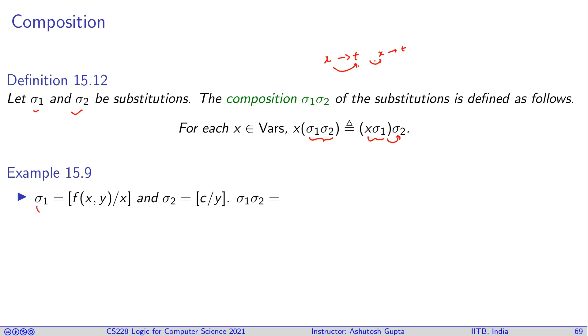Here is an example. If you have a sigma one which replaces x by this term, and sigma two which replaces y by this term, if I compose them, what will happen? If you take x, it will get to f(x,y), and then y gets replaced by c, then finally you get something, x gets replaced by f(x,c). Now let us start with y. The first thing does not replace anything, so y goes to y. If you look at y, it goes to c in the second component. So the final result would be y goes to c. So you can see that composing these two substitutions, I get this substitution.